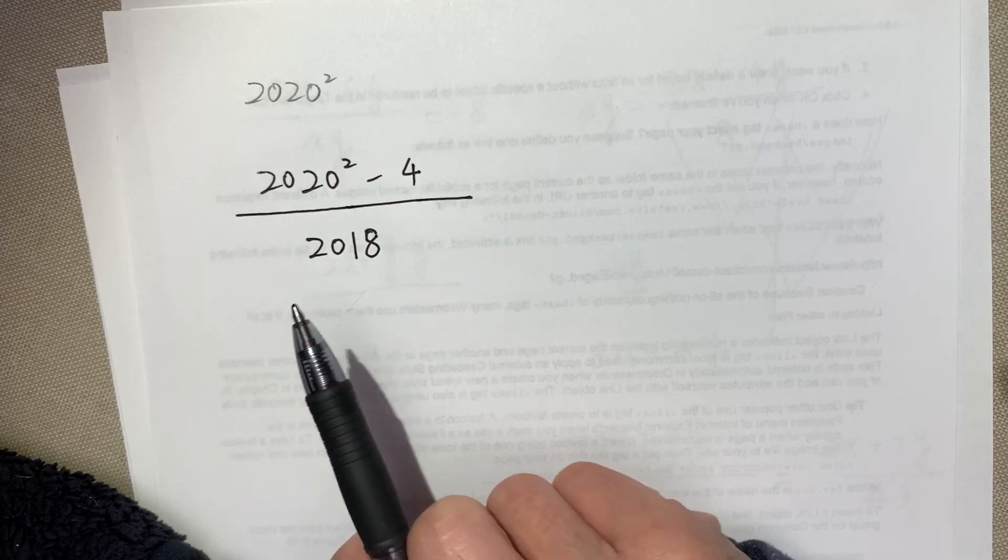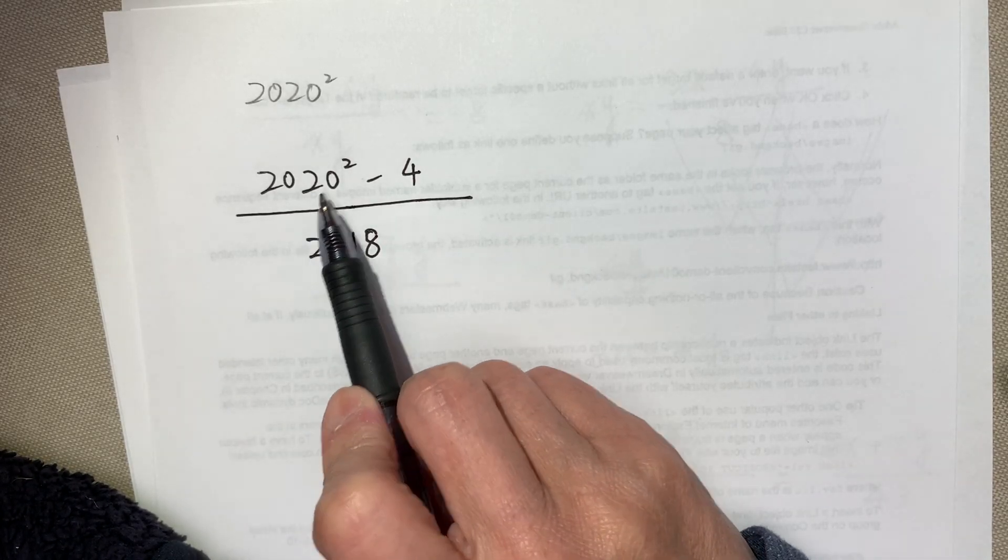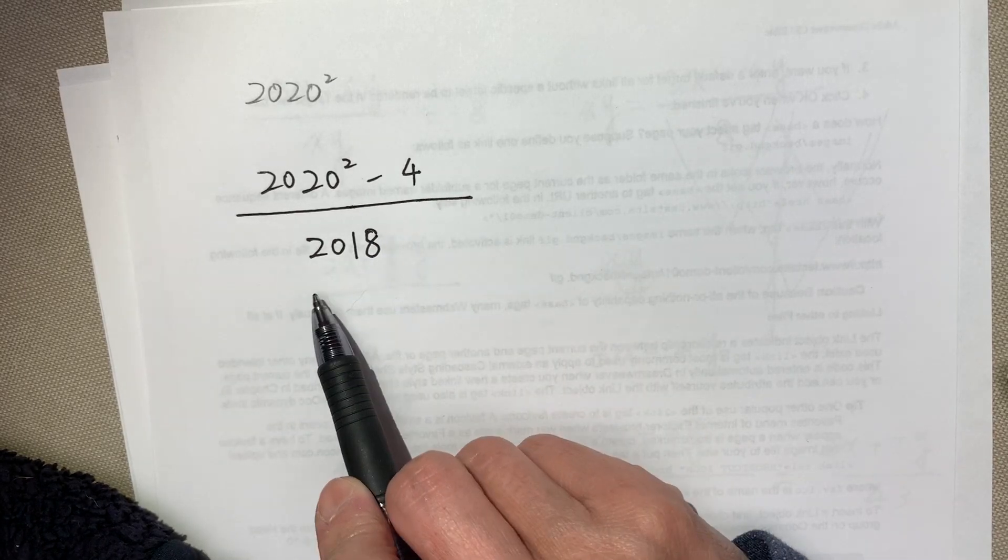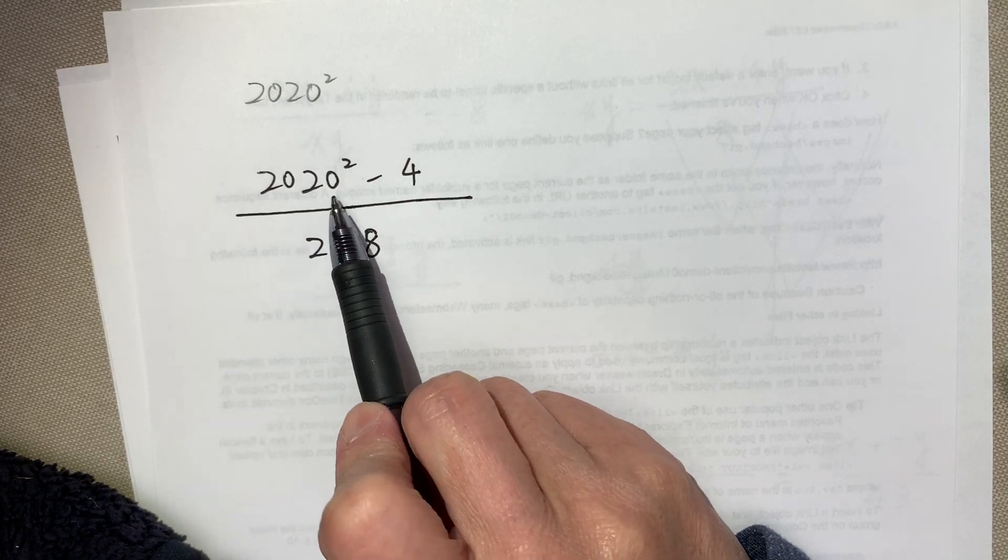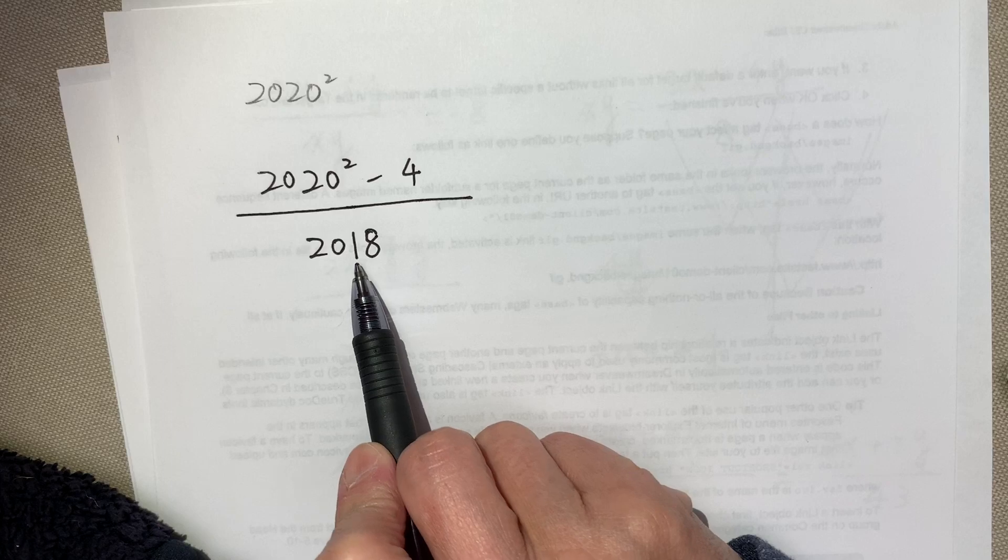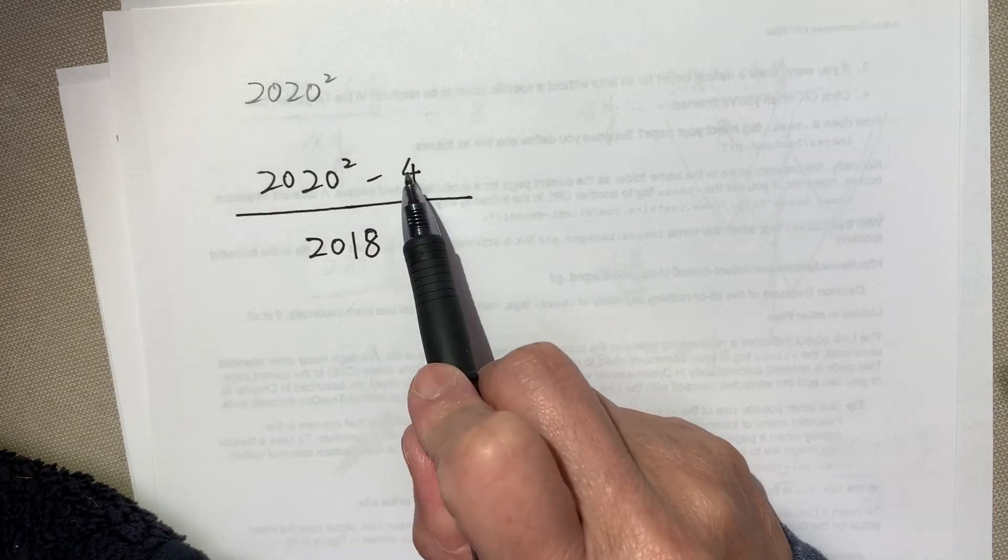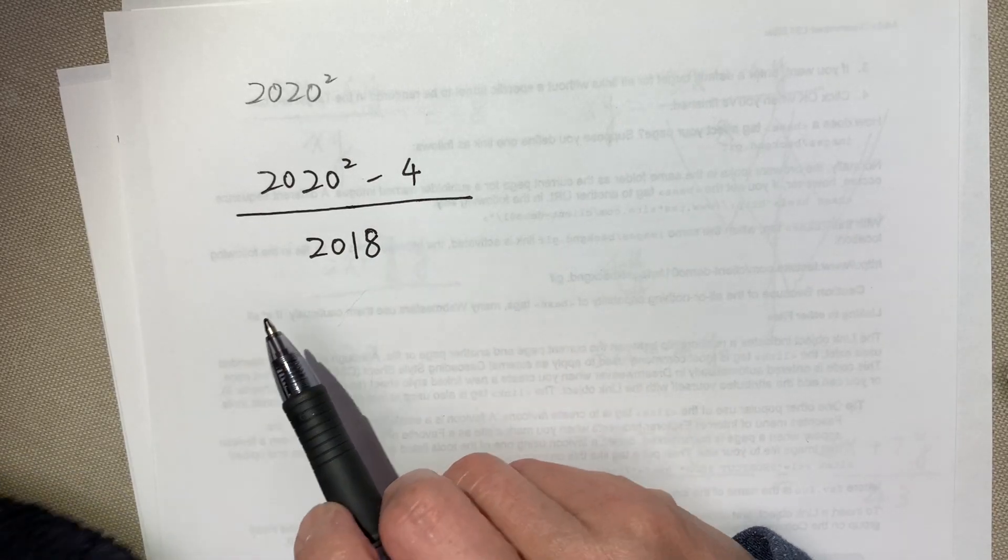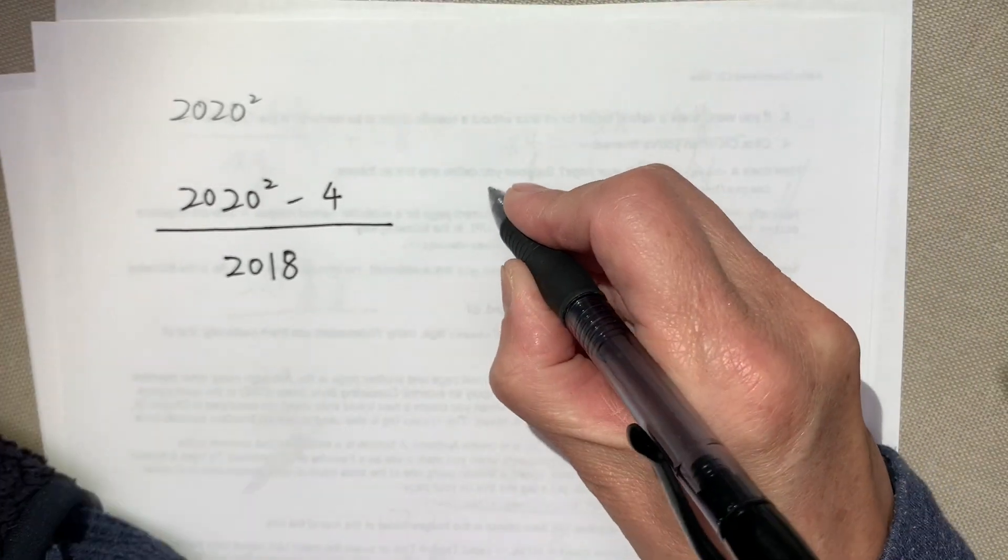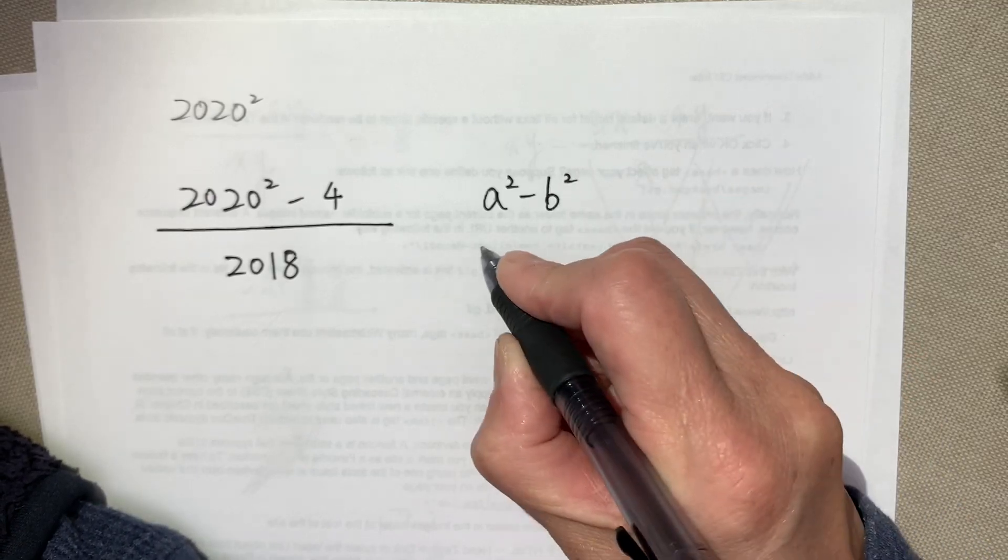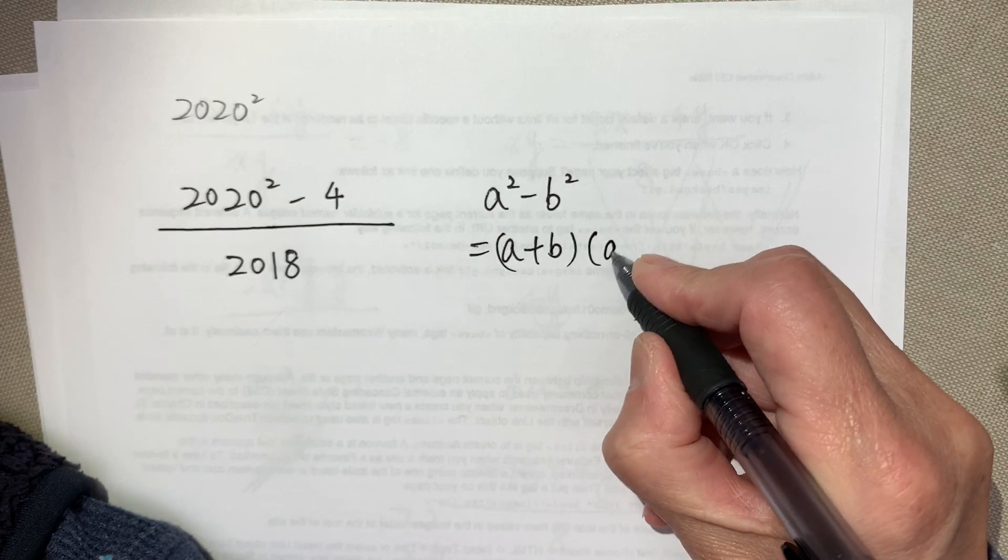When you see this problem, try to find the relationship of the numbers. If you square it and then minus this number and then divide, it might be too complicated. 2020 and 2018, there is only two difference. There is a 4, and 4 is the square of 2. At this time, you can think about a formula. A squared minus B squared equal to A plus B times A minus B.